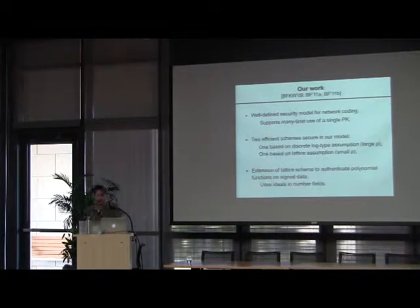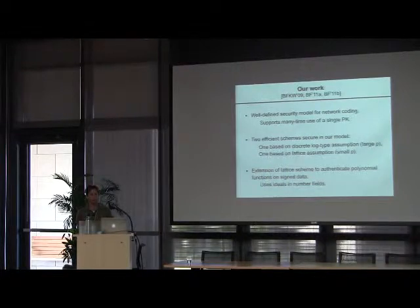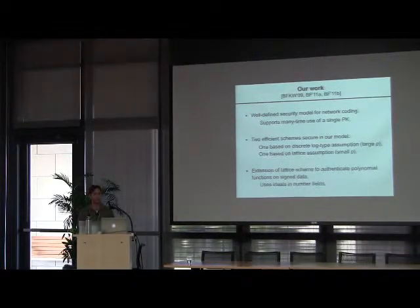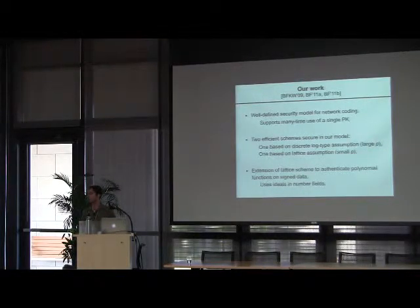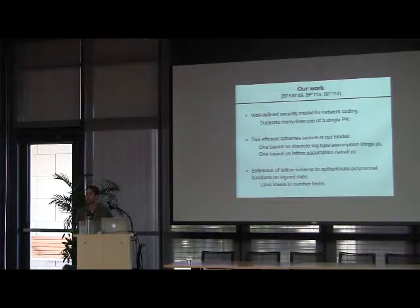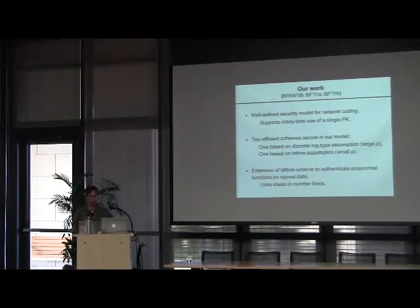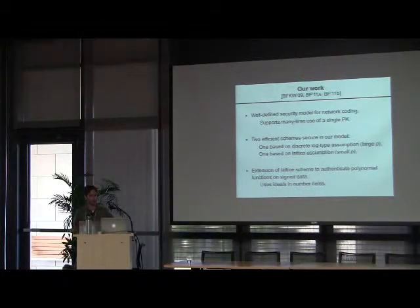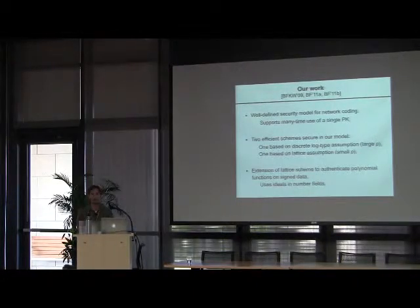What we've done in a series of papers with Boneh, Katz, and Waters: first, we gave a well-defined security model for this network coding problem, and systems in this model can use a single public key to sign many files. I'll present two different schemes that are efficient in terms of minimum signature size per vector signed. One is based on a discrete log type assumption, used for authenticating vectors defined over large finite fields, and one is based on a lattice assumption, used to authenticate vectors defined over small finite fields. Interestingly, we don't know how to do it the other way using the other assumption. At the end, I'll describe an extension to authenticate not only linear combinations, but also polynomial functions on signed data, using ideals in number fields.